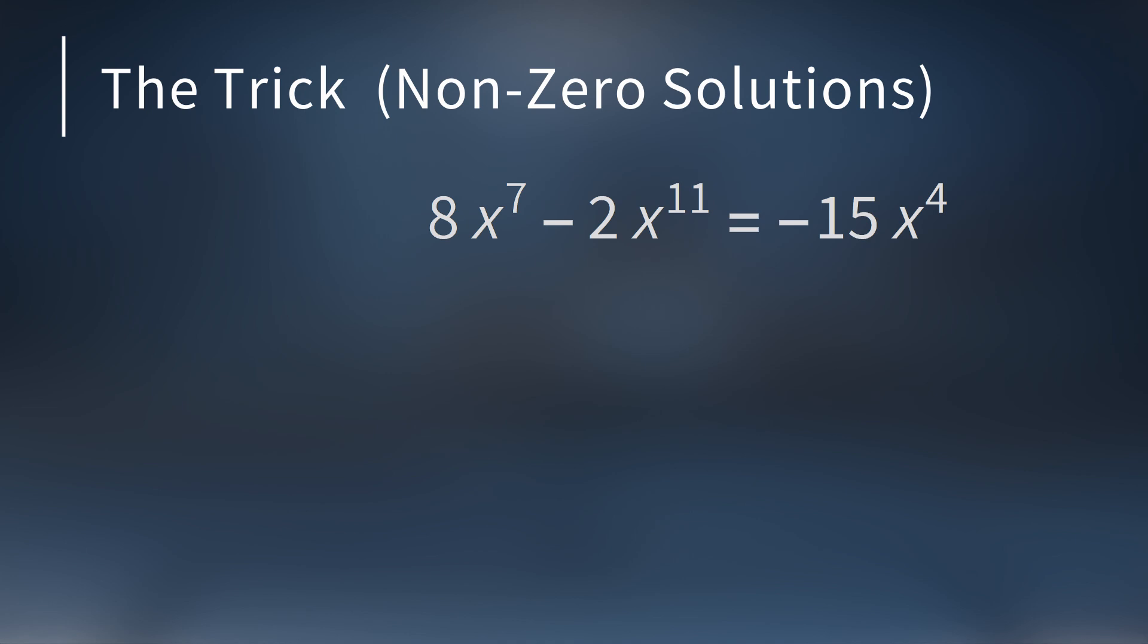The key to finding the non-zero solutions lies in one simple trick, and the best way to see this is with an example. Let's find all integer solutions to the Diophantine equation 8x to the seventh minus 2x to the 11th equals negative 15x to the fourth. First, get all terms on one side, then rearrange them so the polynomial is in standard form.